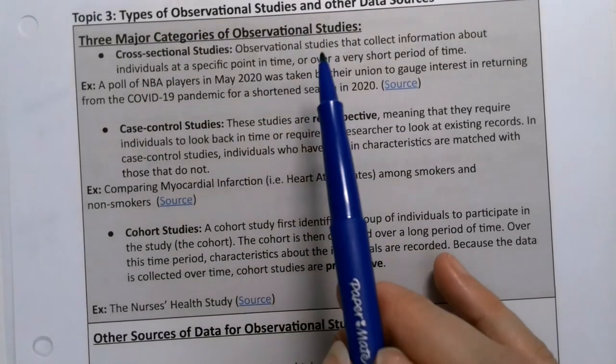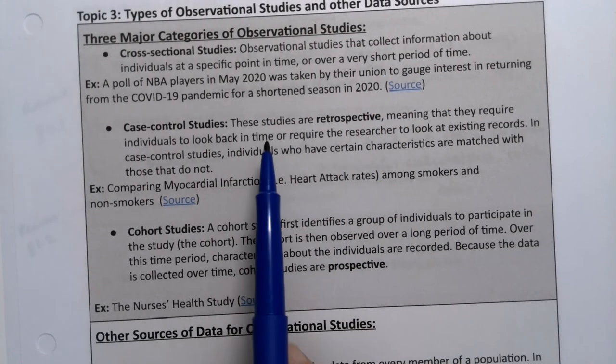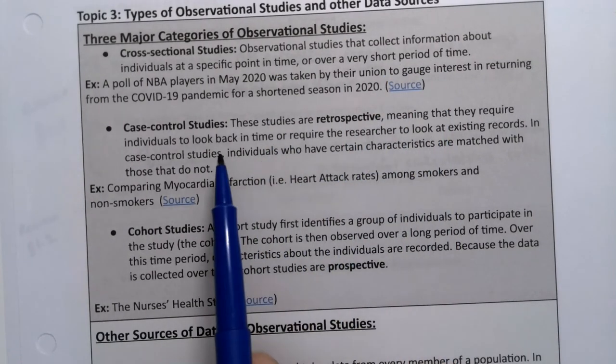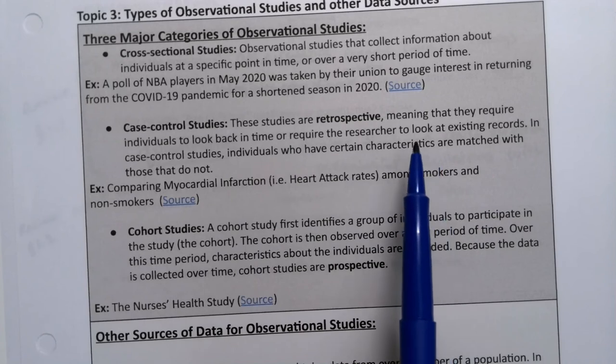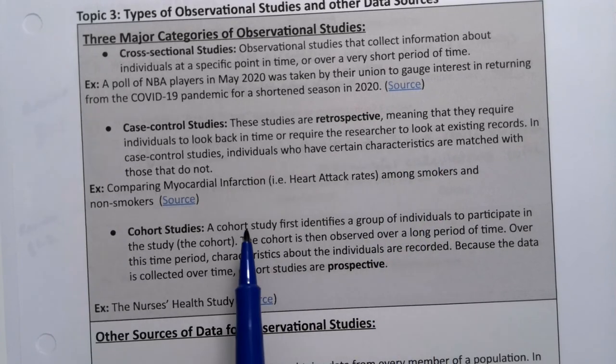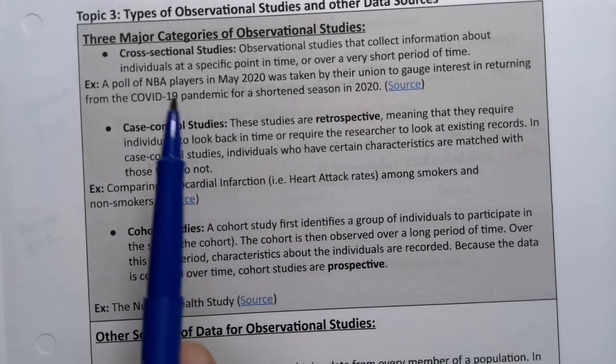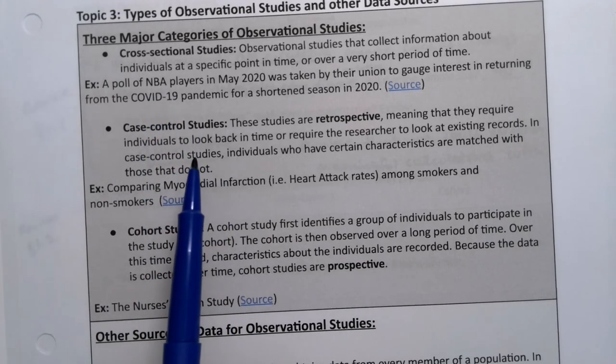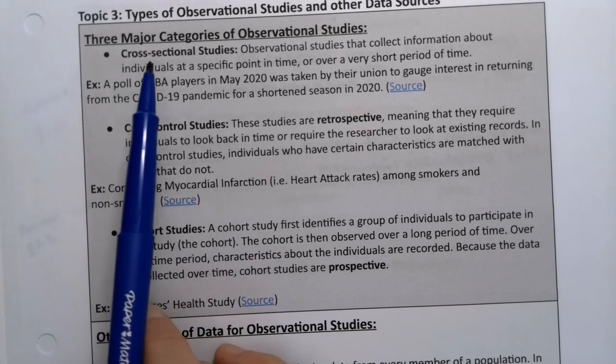Let me go back to 1.2 for a second. Cross-sectional were observational studies that collect information about individuals at a specific point in time or over a short period of time. Case control studies are retrospective, meaning they require individuals to look back in time or require the researcher to look at existing records. And you match individuals with a characteristic with those who do not have that characteristic. And cohort is when you follow a group. So imagine like following a group of pennies throughout their life. But no, it's cross-sectional for sure.